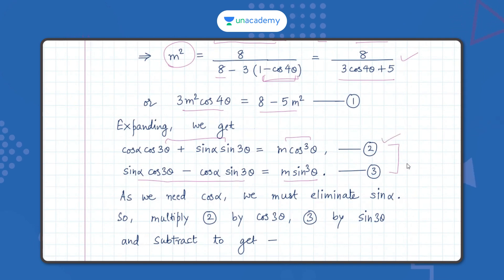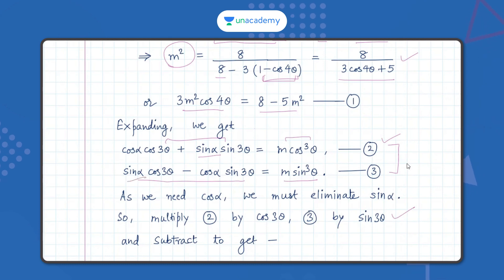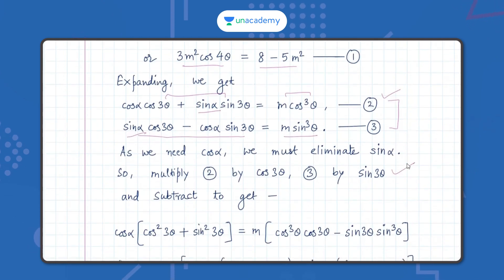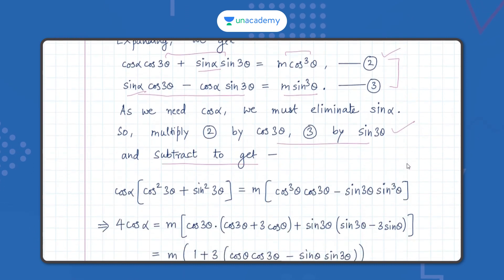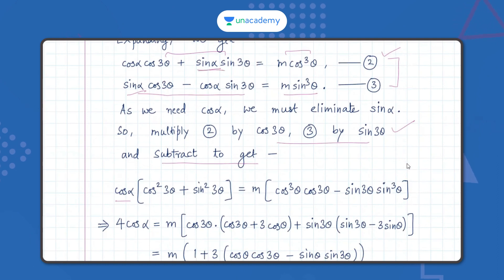To eliminate sinα, multiply equation 2 by cos3θ and equation 3 by sin3θ, then subtract. Alternatively, you can apply Cramer's rule or the substitution method. We follow the multiplication-and-subtraction method: multiplying equation 2 by cos3θ and equation 3 by sin3θ, the sinα terms cancel, and cosα comes out as a common factor with cos²3θ + sin²3θ inside.